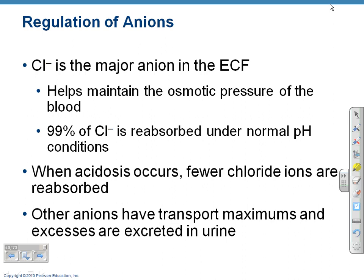Chloride helps to maintain the osmotic pressure of the blood. Water and ionic concentrations are extremely important — water follows sodium, which is the major ion, but chloride ions are also involved in osmotic pressure. Ninety-nine percent of chloride ions are reabsorbed under normal pH conditions. However, when acidosis occurs — a situation where blood pH drops below 7.35 — the conditions change.